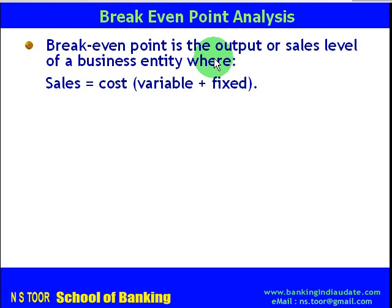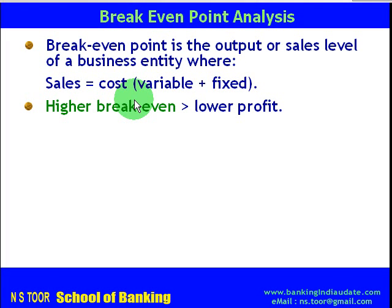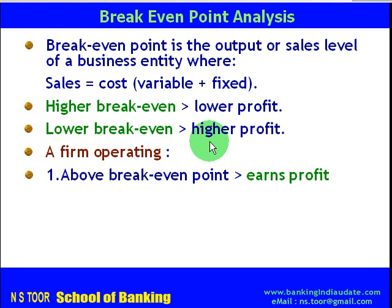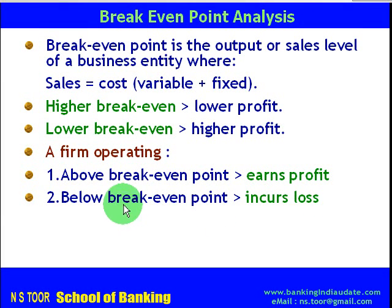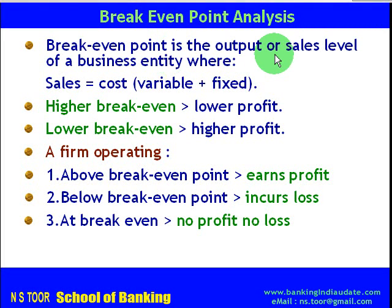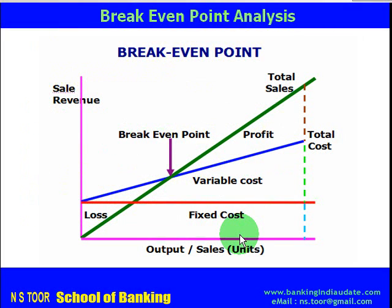At break even there is no profit and no loss because sales are equal to cost. Those firms which have a higher breakeven earn lower profits, and those firms which have a lower breakeven earn higher profit. If a firm is operating above breakeven point it earns profits; if it operates below breakeven point it incurs a loss; and if it is just operating at breakeven point level there is no profit no loss.